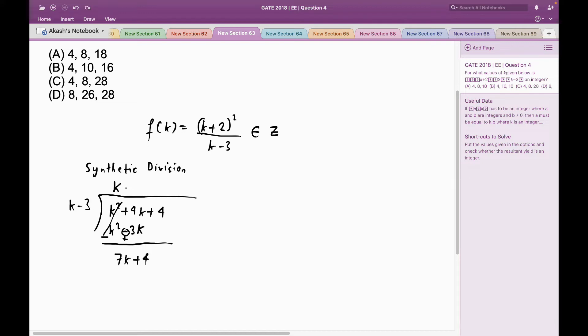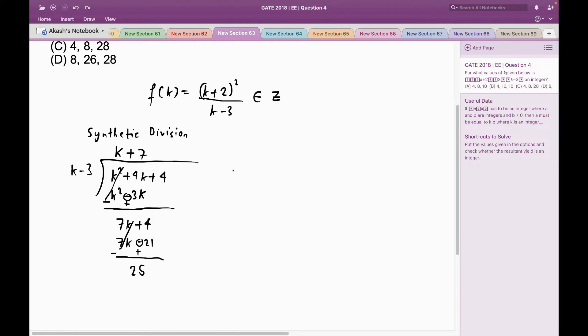Now to get 7k, I have to multiply the divisor by 7 so this would be 7k-21, and the signs would be again reversed. So now after applying synthetic division, I can write the dividend as (k+2)².